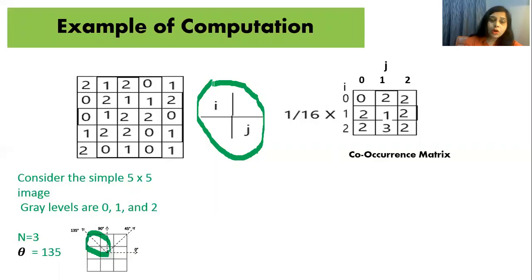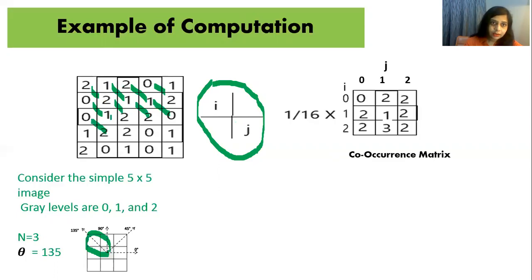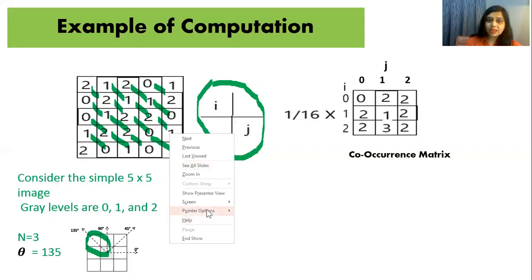Counting all pixels with this 135-degree alignment in the 5-by-5 image, there are sixteen such pairs.